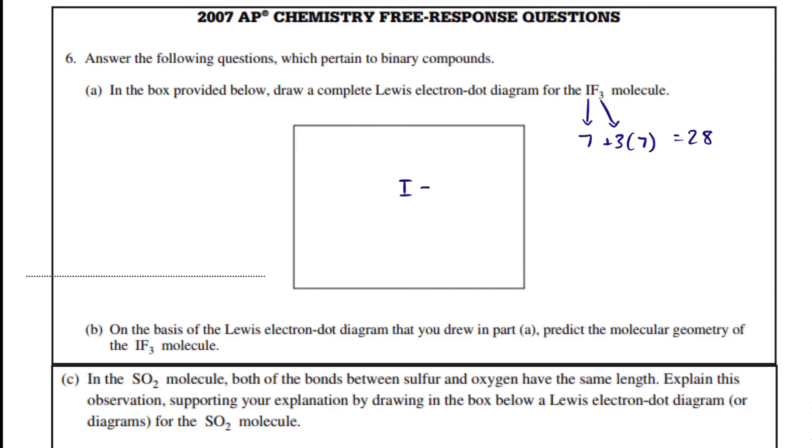Iodine will be our central element, we'll bond our fluorines around, and we're going to give every element 8 valence electrons. And when we do, we're going to count them up and see if we match 28.